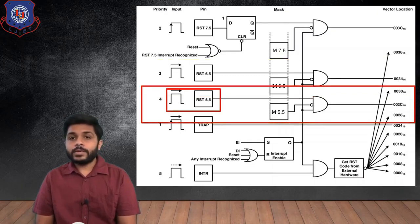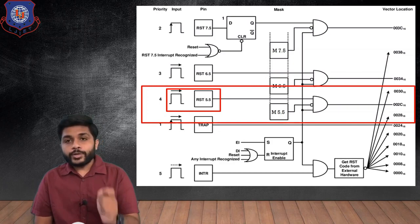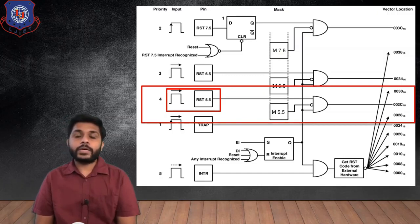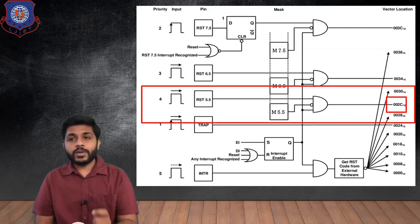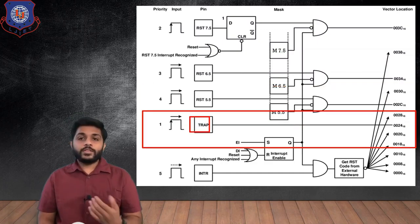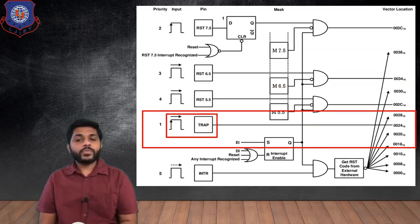The next interrupt is RST 5.5, which is also level triggered. Level triggered means the signal received at this pin should be high for a particular amount of time. If this interrupt is not masked, the processor will provide the vector location, and the vector location for RST 5.5 is 002CH.